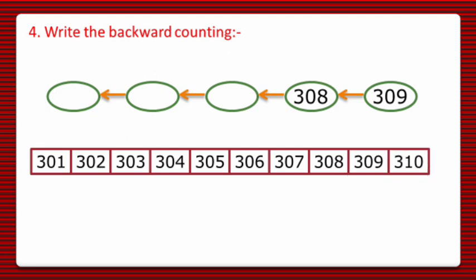From this number line, it is clear that 308 comes before 309 and 307 comes before 308. So we will write down 307 as the first blank.